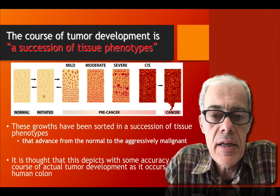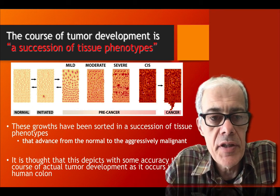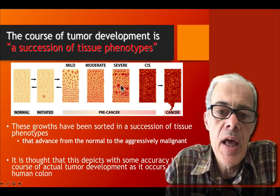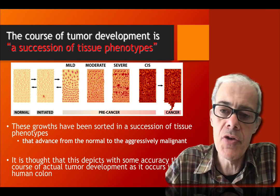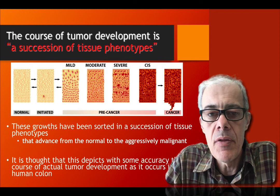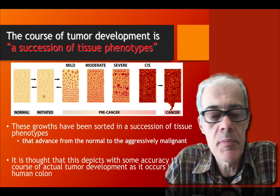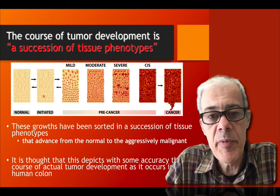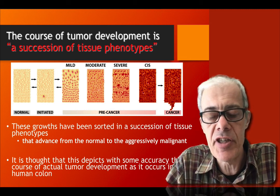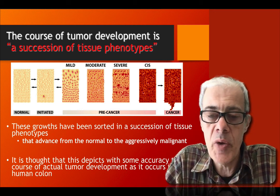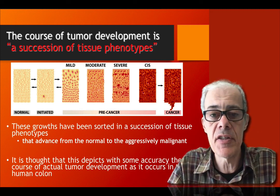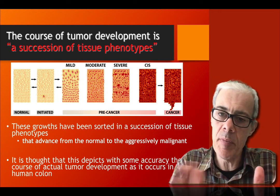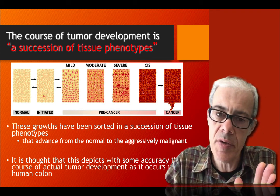What we're looking at in these slides, or these individual images, are a succession of phenotypes leading from normal cells through to cancer cells. These have been observed in different patients over different periods of time and ordered in terms of severity. It's very hard to study one patient over a 20- or 30-year period, so they're taken from different patients, and the severity has been categorized and organized in a logical sequence.